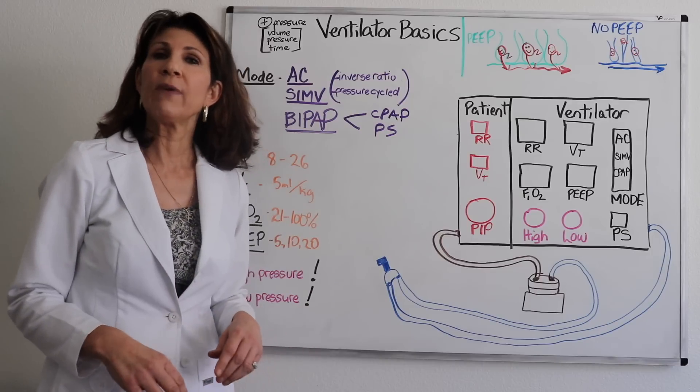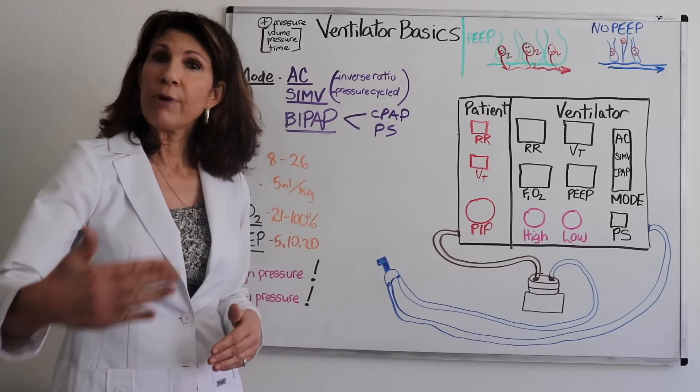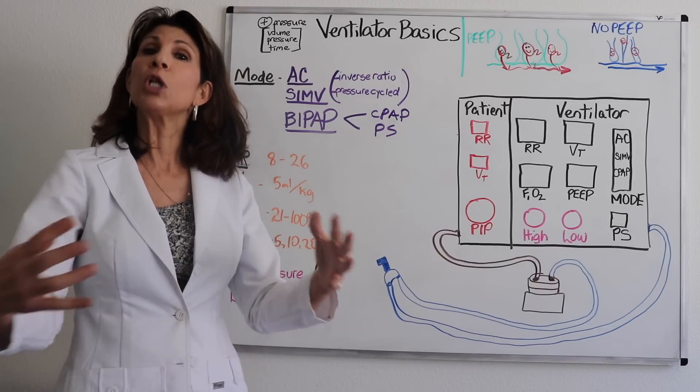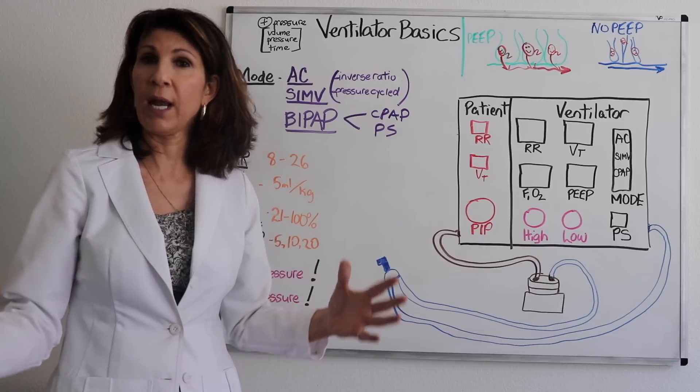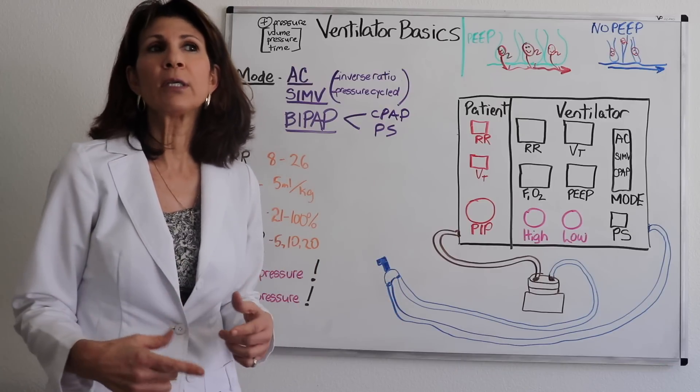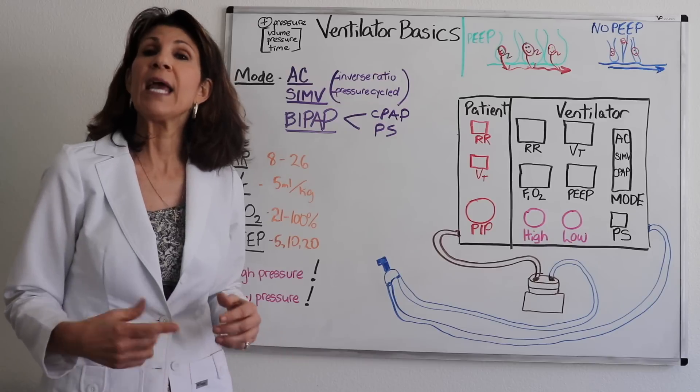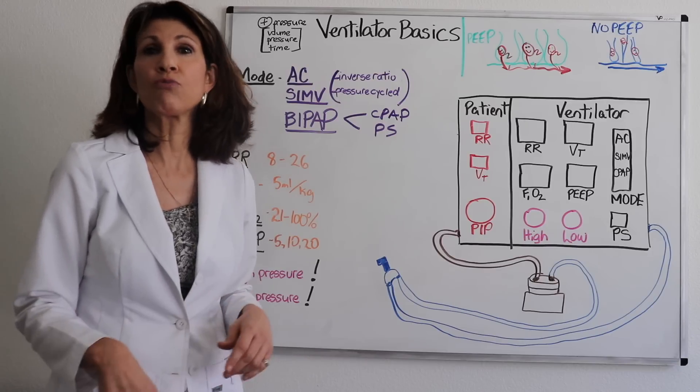Whereas with the pressure cycle ventilation, the inspiratory phase ends when that preset pressure is reached. So it's more forgiving in terms of patient's compliance of their lungs or how well their lungs will expand when the air enters it. Does their inspiratory phase end when a preset volume or when a preset pressure is reached?